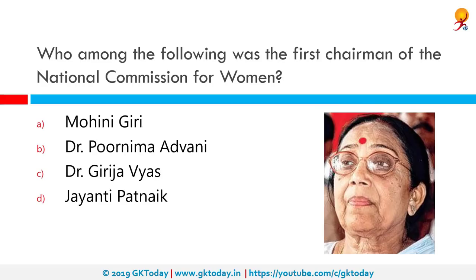Who among the following was the first chairman of the National Commission for Women? The correct answer is Jayanti Patnaik. She is an Indian parliamentarian and renowned social worker who was the first chairperson of the National Commission for Women. Her term of office was from 3rd February 1992 to 30th January 1995 — roughly three years.